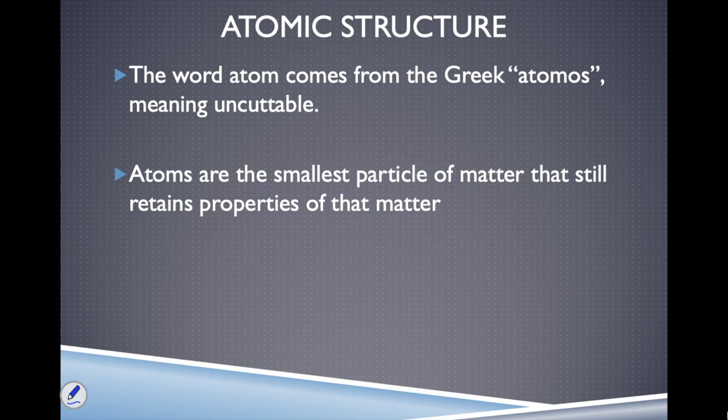You can divide a chunk of gold down to the atomic level. Once you get down to one atom of gold, that would be the last form of the substance that would still retain properties of gold. That doesn't mean that atoms are the smallest thing that exists.